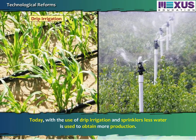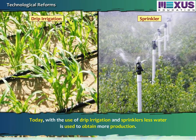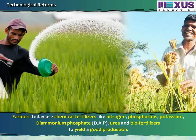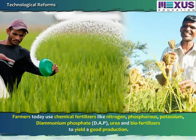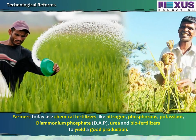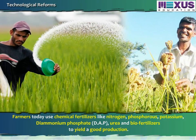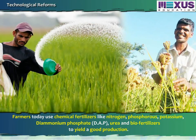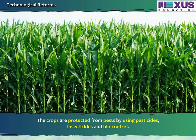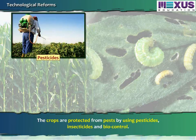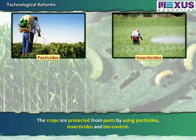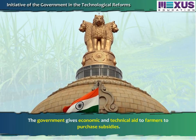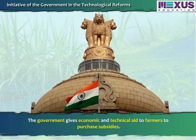Today, with the use of drip irrigation and sprinklers, less water is used to obtain more production. Farmers today use chemical fertilizers like nitrogen, phosphorus, potassium, diammonium phosphate (DAP), urea and biofertilizers to yield good production. The crops are protected from pests by using pesticides, insecticides and biocontrol.